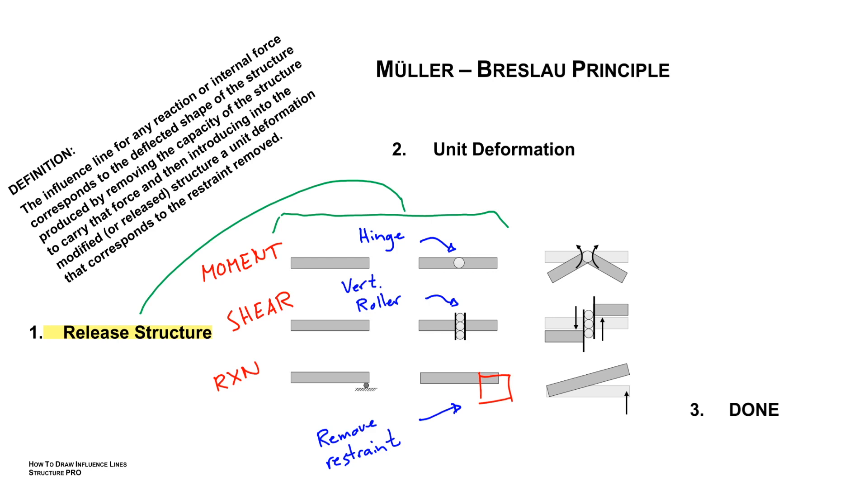Okay, so our next step is to introduce what I'll call a unit deformation. Okay, we're doing this at the same spot where we released the structure in step one. So if we introduce the hinge, now we're going to apply a moment on either side of the hinge to create a unit rotation equal to one. Which in this case, both sides equal to 0.5.